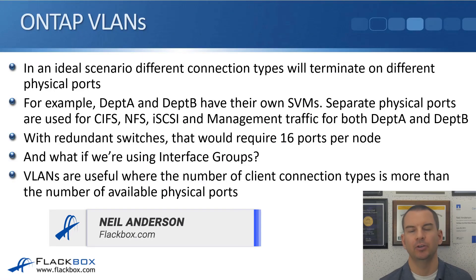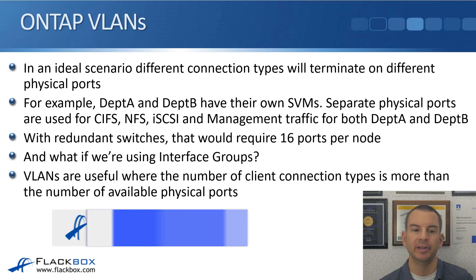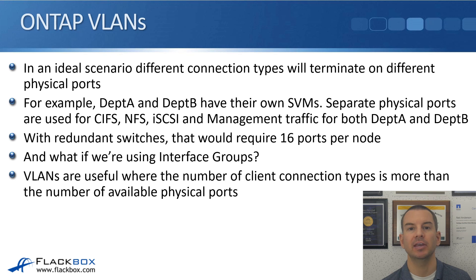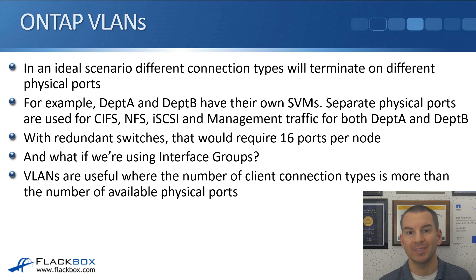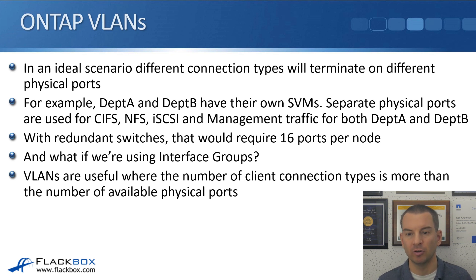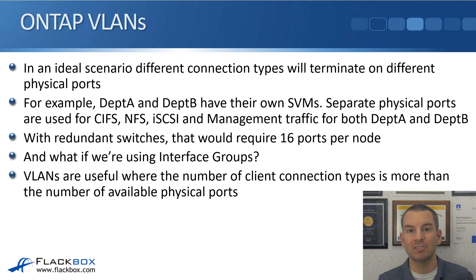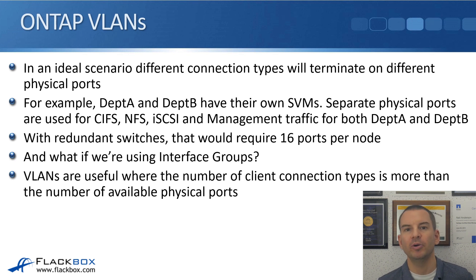In the ideal scenario, different connection types would be terminating on different physical ports. For example, let's say we've got department A and department B, each with a separate SVM, both using CIFS, NFS, iSCSI, and management traffic. If we wanted to keep those connections on separate physical ports for two different SVMs connecting out to two redundant switches, we would need 16 physical ports per node, and even more if using interface groups.